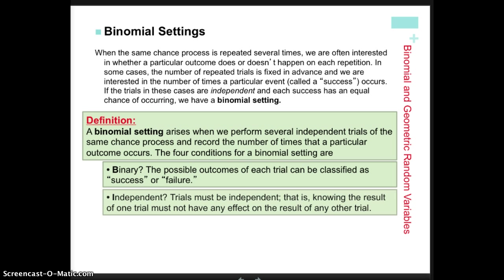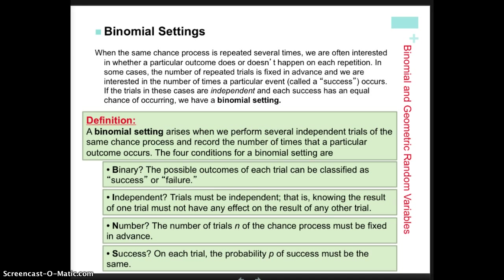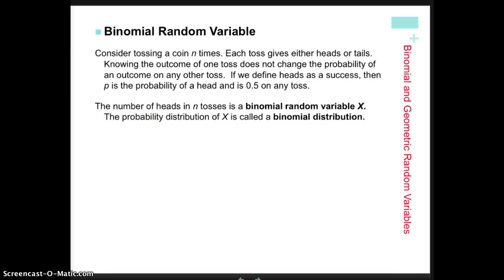We also need independence — all the trials must be independent and not have an impact on any other trials. Next, there must be a specific number of trials; for example, rolling the die five times means n equals 5. And the probability of success must be consistent for every trial. You can remember these requirements through the B-I-N-S initials, which stands for binomial — a great mnemonic since binomial starts with B-I-N.